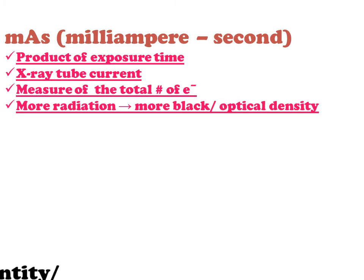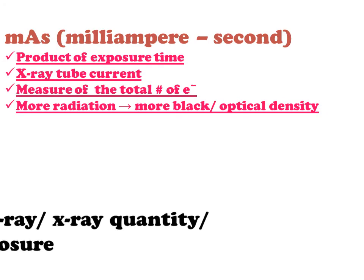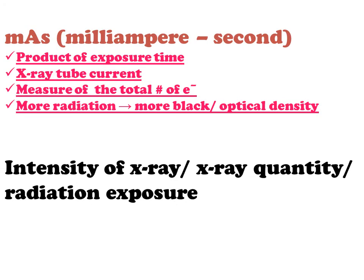It's a measure of the total number of electrons. More radiation means more black or optical density on the radiograph. Intensity of X-ray, also known as X-ray quantity or radiation exposure, is measured in milligray or milliroentgen.